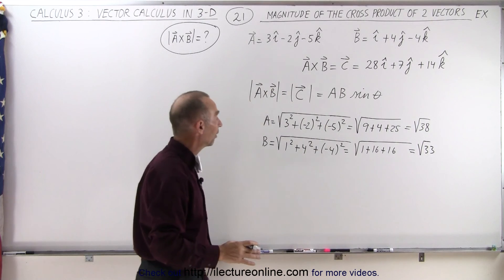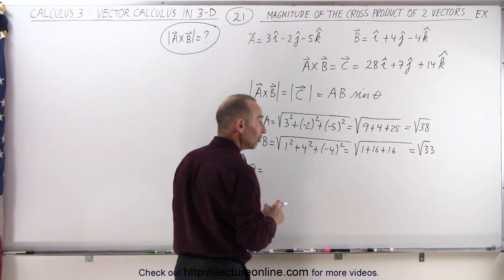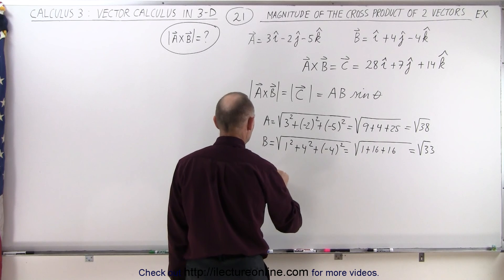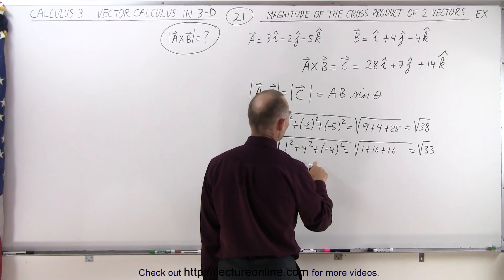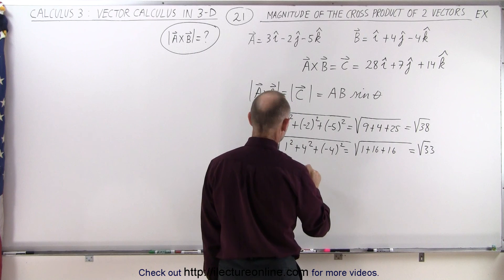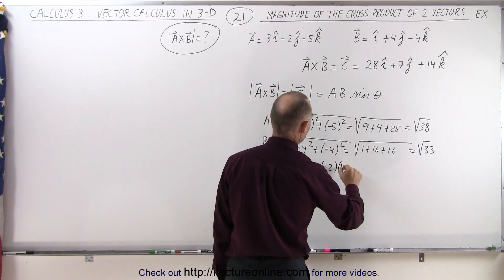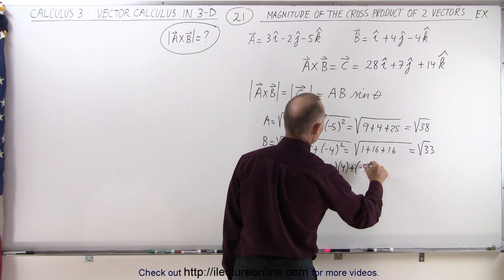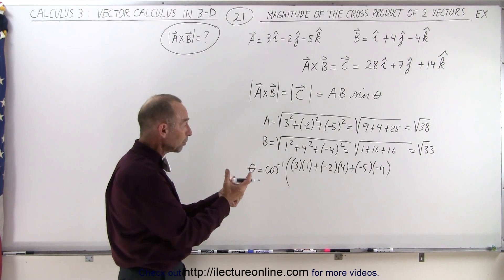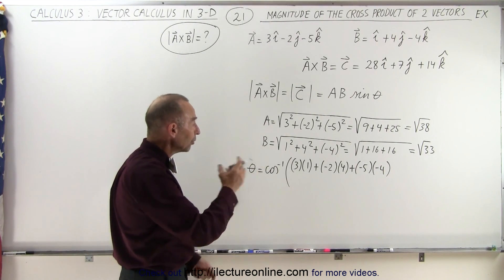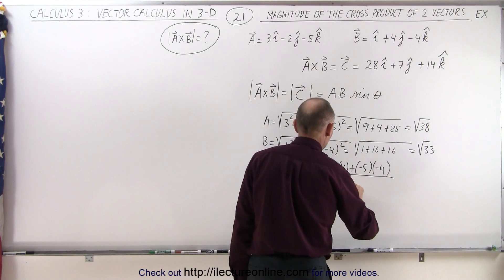Now we have the magnitudes of both a and b. The next thing we need is the angle, which can be found using the dot product definition. The angle is equal to the inverse cosine of the dot product of the two vectors divided by the product of their magnitudes — so that's 3 times 1 plus negative 2 times 4 plus negative 5 times negative 4, all divided by the square root of 38 times the square root of 33.